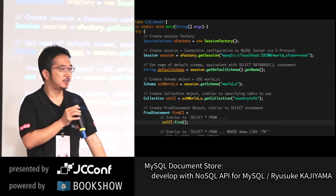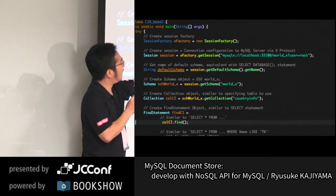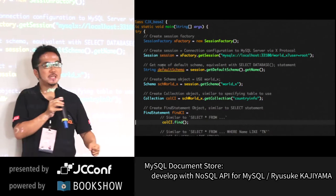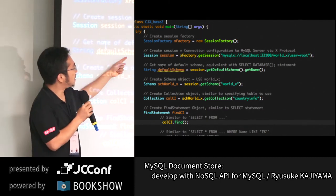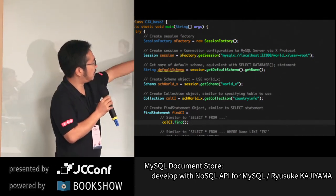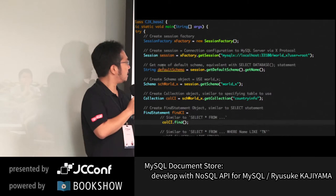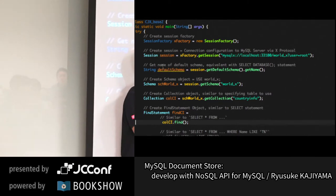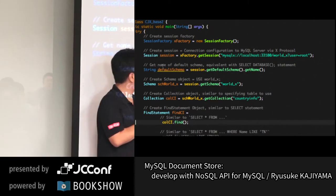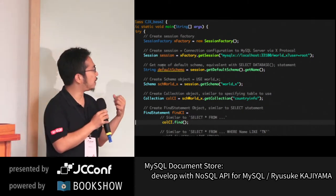Next step: getting the schema. 'session.getDefaultSchema()' reads which schema you're connecting to — this is more of a debug purpose, similar to typing 'SELECT DATABASE()' in SQL. Then creating a new schema object: 'sch = session.getSchema("world_x")' to get the schema into the schema object. Against this schema, you call 'getCollection("countryinfo")' to fetch the collection of JSON documents from the countryinfo table.